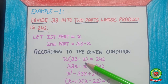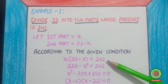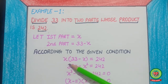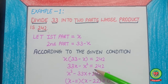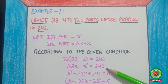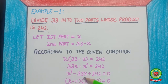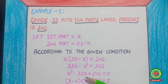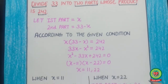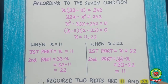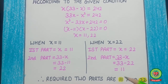So, x into (33 minus x) equals 242. After applying the arrow method, our value is 33x minus x² equals 242. By collecting terms, x² minus 33x plus 242 equals 0. Now, we are going to solve this quadratic equation by factorization method. You can also solve it by the discriminant method or by completing the square method.